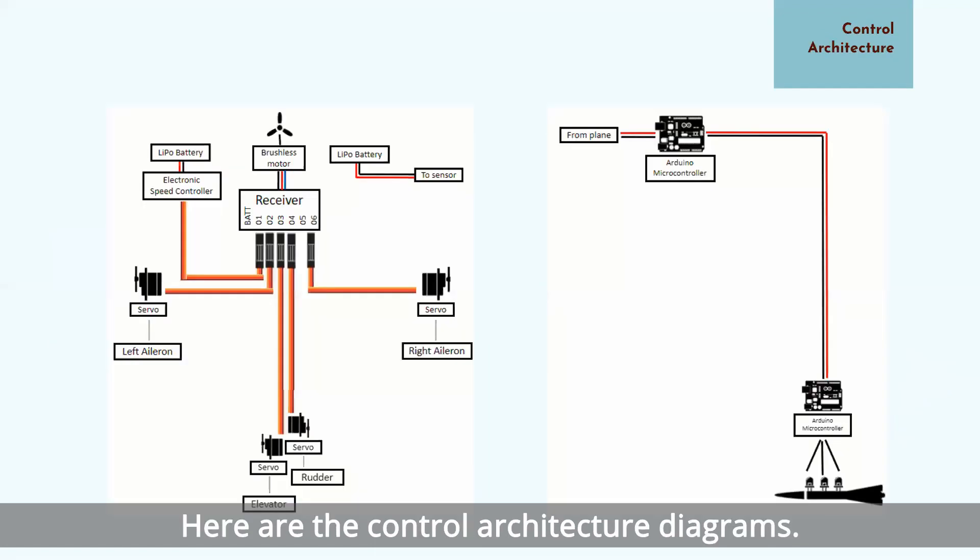Here are the control architecture diagrams. The diagram on the left shows the control architecture of the Arrow J2, while the diagram on the right illustrates the control architecture of the external sensor. A separate lithium polymer battery is used to power the LEDs of the external sensor.